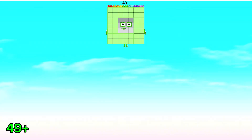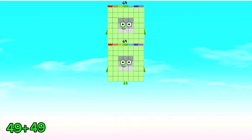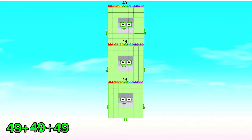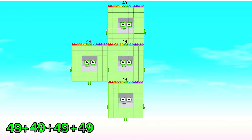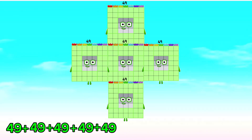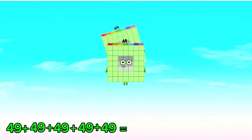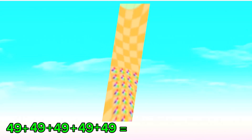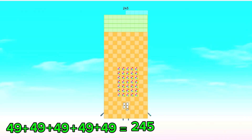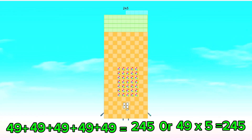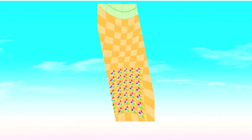49 plus 49 plus 49 plus 49 plus 49 is equals to 245. Or, 49 times 5 is equals to 245.